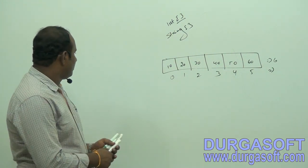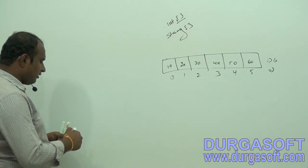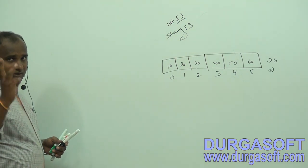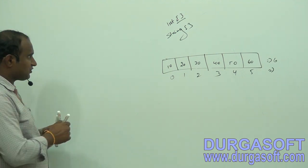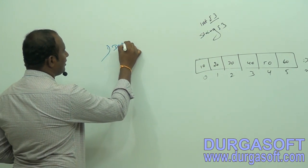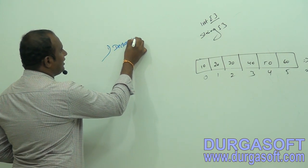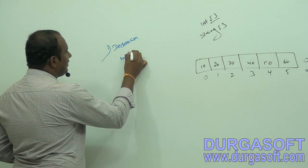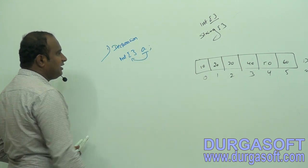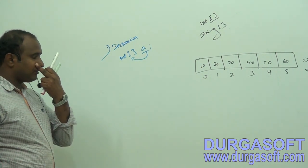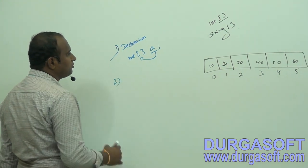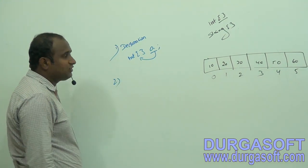For array declaration and initialization, we have three approaches. The first is declaration — declare integer array A. A is a variable of integer array type. The second is instantiation, which is nothing but object creation: A equals new integer array of size 5.